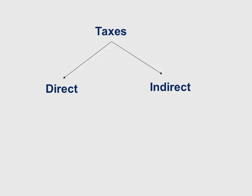Let's break this down further. When we are looking at the direct tax, we have a tax on income. When we are looking at indirect tax, we are looking at a tax on expenditure.